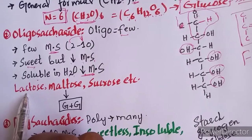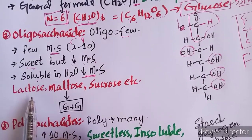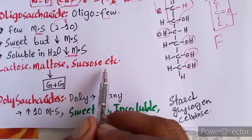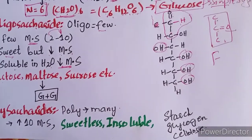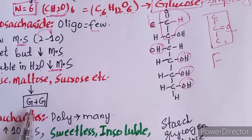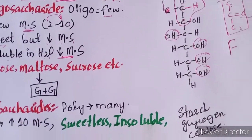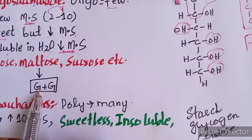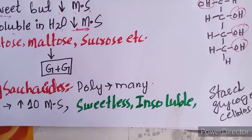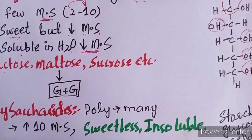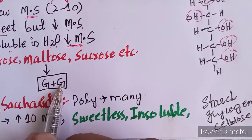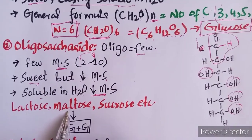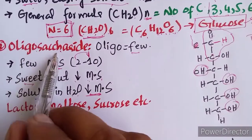Examples of oligosaccharides include lactose, maltose, sucrose, and others. Maltose is made of two glucose units joined together — glucose + glucose = maltose. So glucose is the monosaccharide, and maltose is an example of an oligosaccharide.